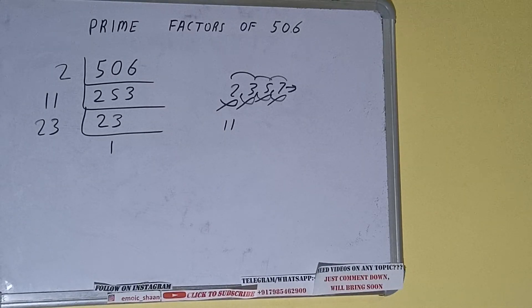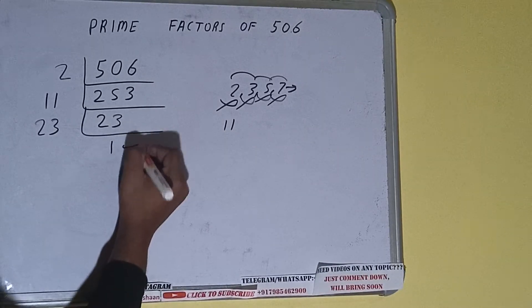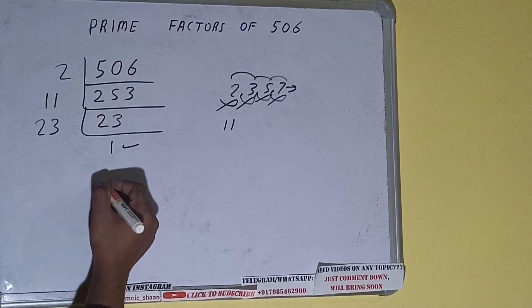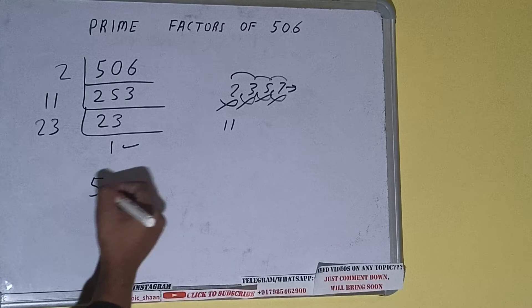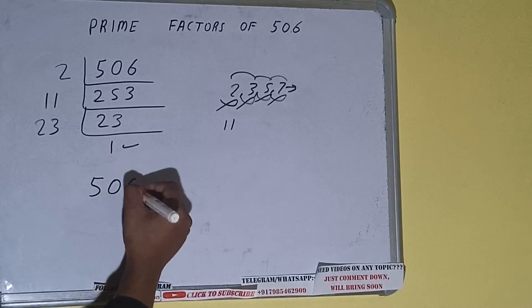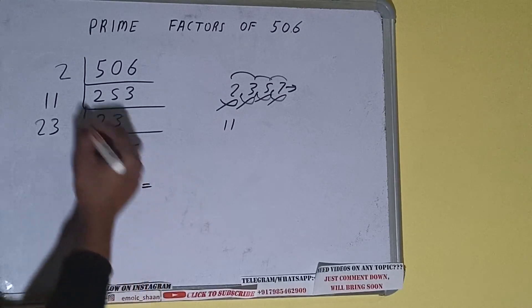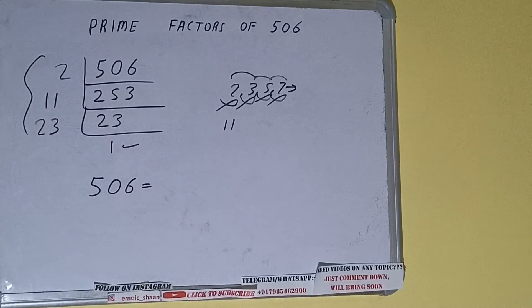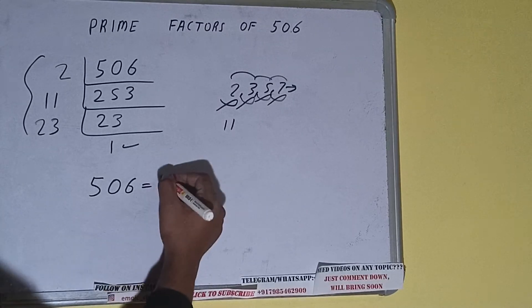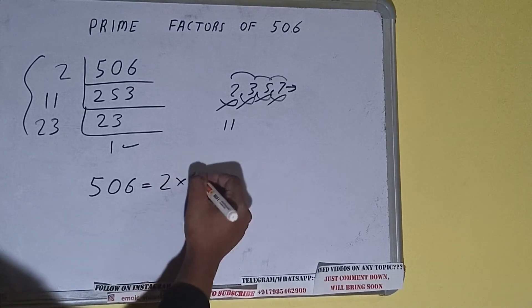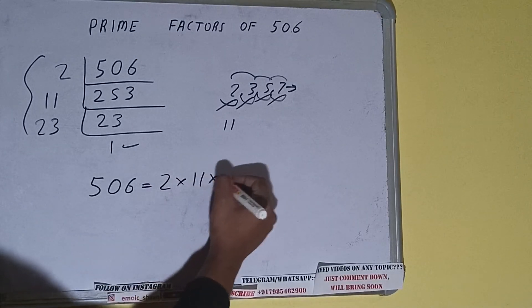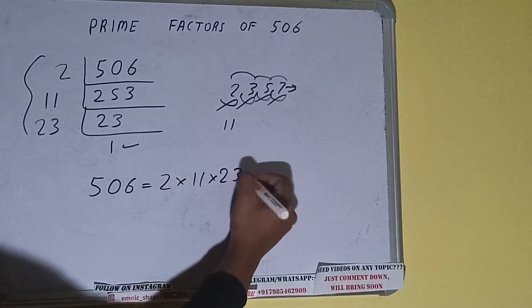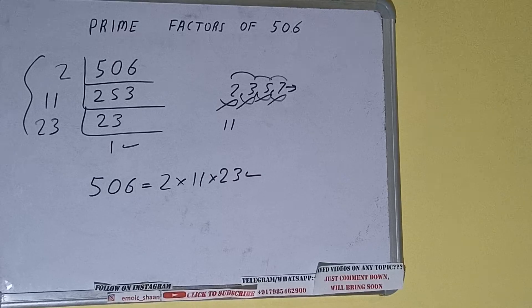Once we get 1 we need to stop. Now, the prime factors of 506 equals the product of whatever we have on the left hand side, that is 2 × 11 × 23. That will be the answer.